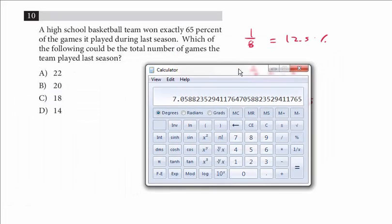You could simply just take all of these and multiply. So you could use 22 times .65. You see that's not a real number. 20 times .65 is 13.